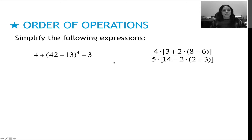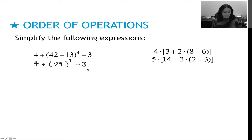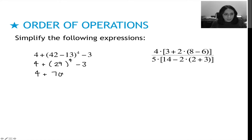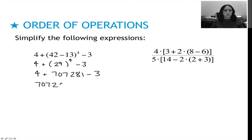Go ahead and try these on your own, then press play to see how you did. For this question, I first evaluate what's in parentheses: 42 minus 13 is 29. I keep the 4 exponent on the outside. I'll need a calculator for 29 to the 4th power. That gives 4 plus 707,281 minus 3. Adding 4 gives 707,285, and subtracting 3 gives a final answer of 707,282.